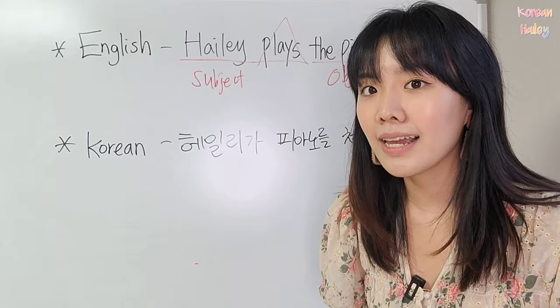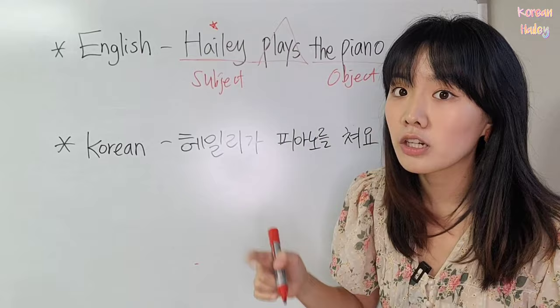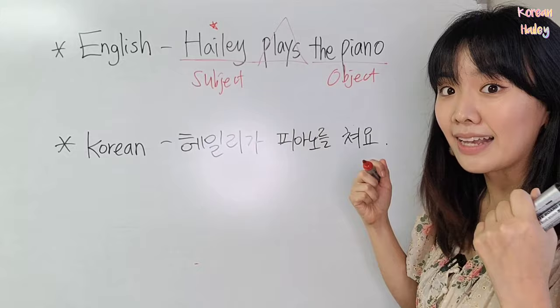In English, we know what is the subject and object because Ailey comes first, so it becomes the subject. And then 'piano' comes last, so we know it is the object.